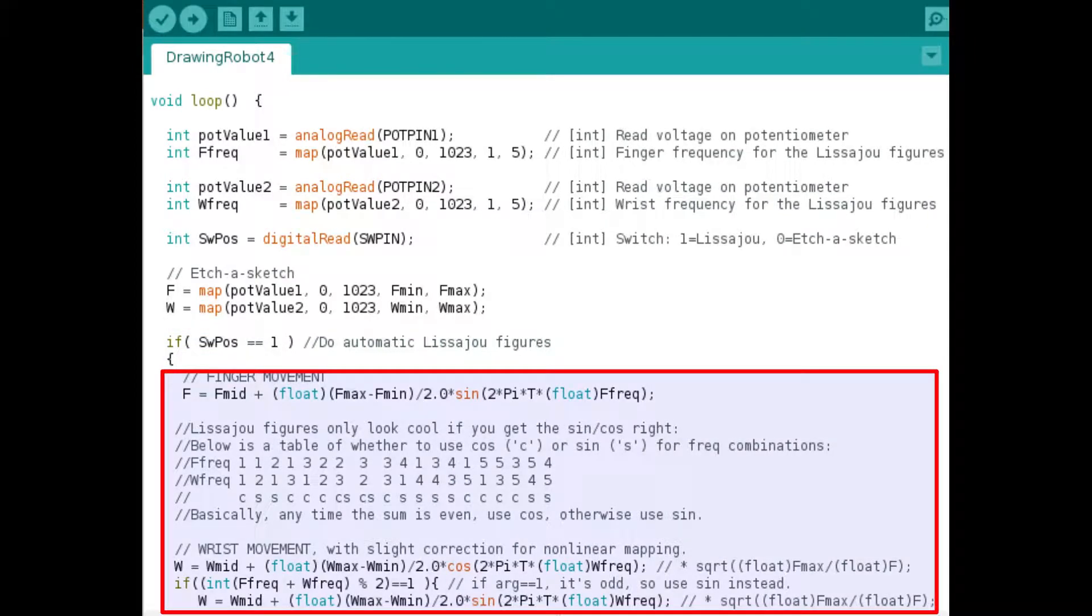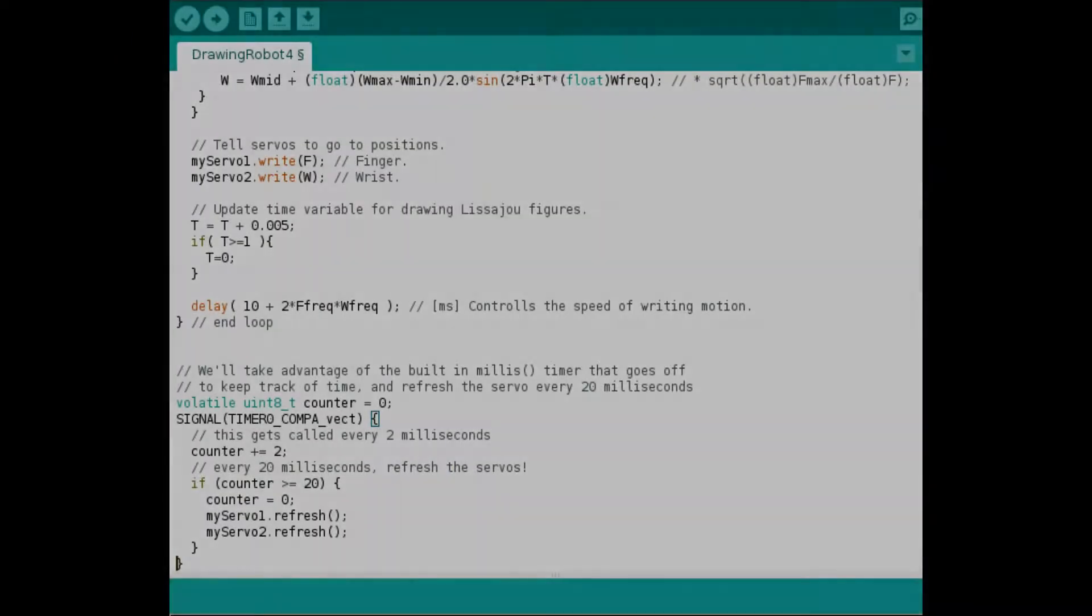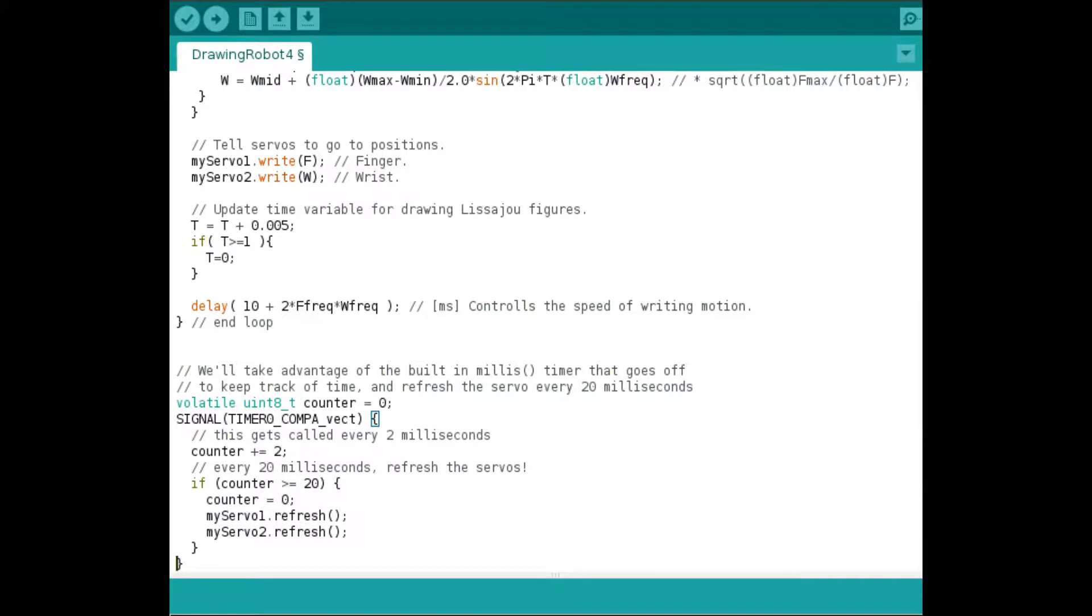Now, the Lissajous figure mode, the automatic mode, is really tricky because you have to assign whether it's a cosine or a sine function, depending on the number of variations. And so that's what is being done in the table below here. And in this section here, we're just finishing up the wrist motion there.